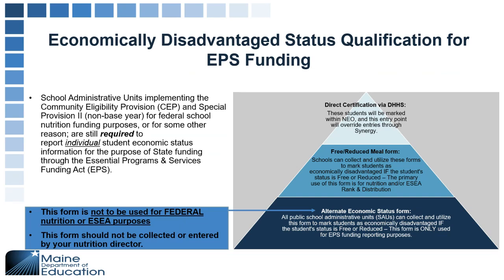Regarding whether data needs to match for October 1 and April 1 verification: the April count is no longer used for EPS. It is used for tuition. We are still collecting that data in April, but it's not for the EPS calculation.